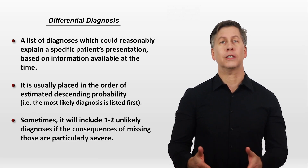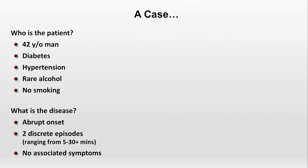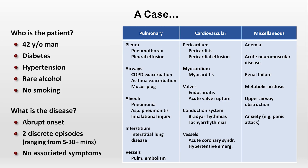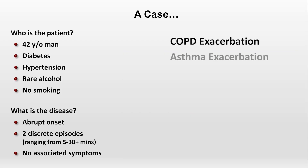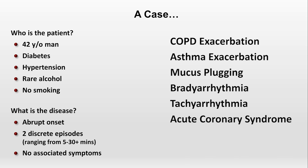So what is our patient's differential? Here were the key features, and here is one of the diagnostic frameworks for acute dyspnea. Remember, one of the key features was that it's episodic — this is particularly helpful because it's a relatively uncommon feature of dyspnea. So let's cross off all the diagnoses on our framework that do not usually cause episodic dyspnea and see what's left over. What remains: COPD and asthma exacerbations, mucus plugging, arrhythmias, acute coronary syndrome, and anxiety disorders.